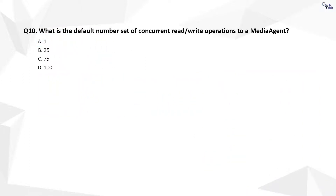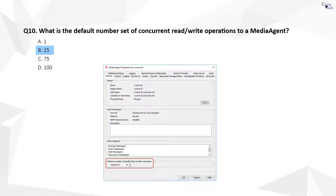Question 10. The correct answer is B. The default number of concurrent read-write operations to a media agent is 25. This value can be set between 1 and 75.